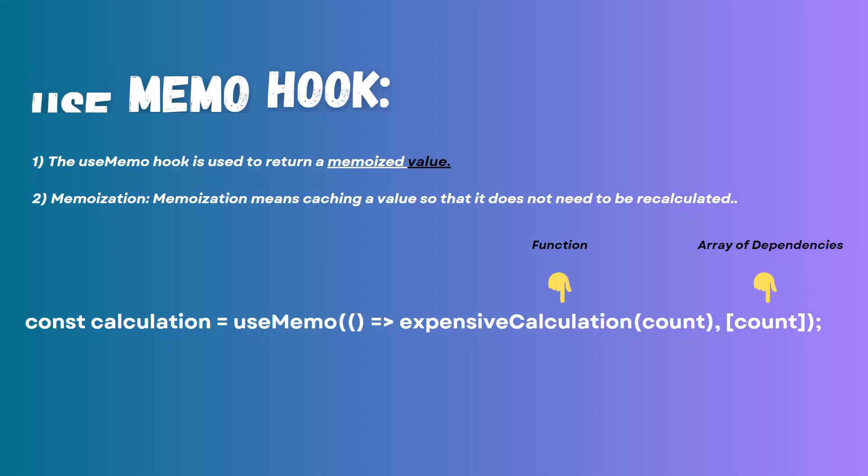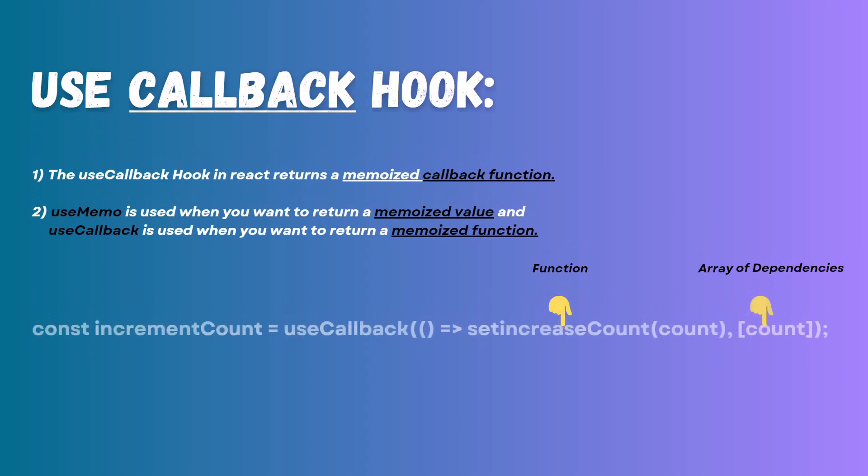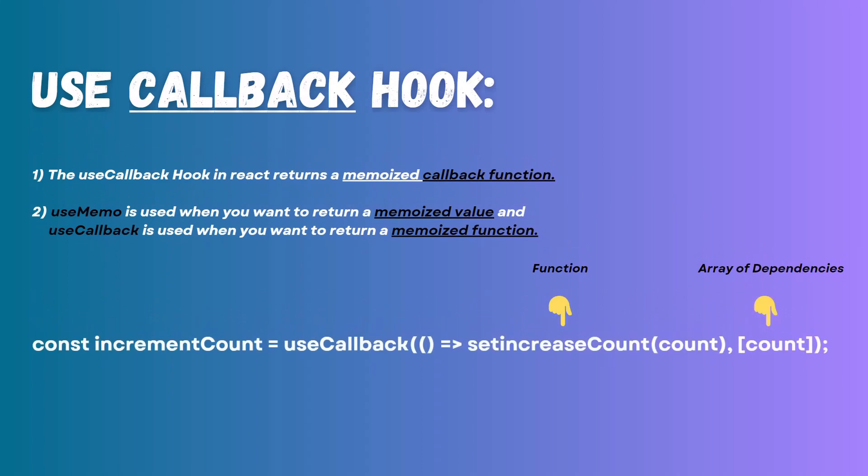Now let's understand the useCallback hook. useCallback returns a memoized callback function and will only run when one of its dependencies changes. useCallback and useMemo are similar — the only difference is that useMemo returns a memoized value while useCallback returns a memoized function. Both hooks are used to prevent unnecessary re-rendering of components.